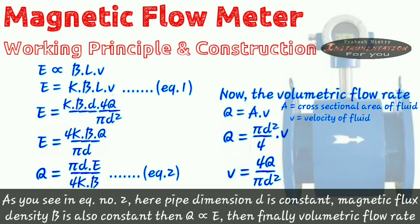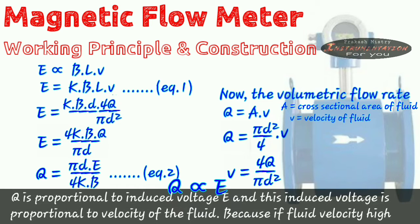Then as you see in equation number 2, here pipe dimension D is constant. Magnetic flux density B is also constant. Then Q is proportional to E. That means now finally volumetric flow rate Q is proportional to induced voltage E.